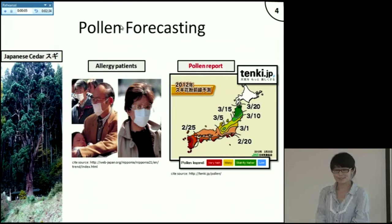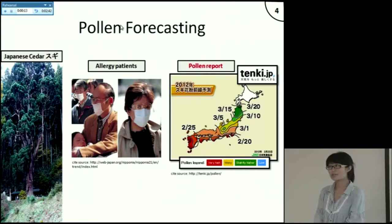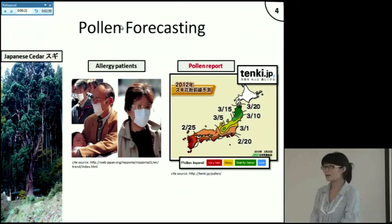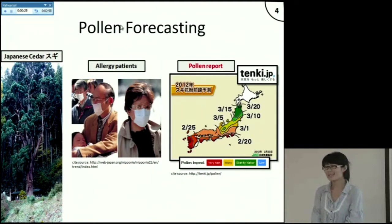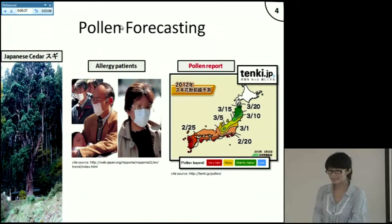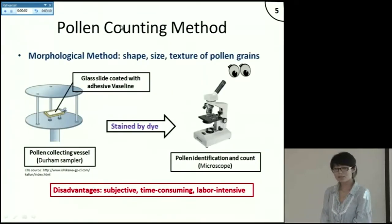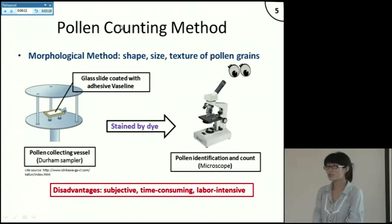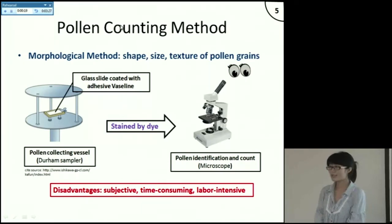Because pollinosis is difficult to completely cure, pollen forecasting is very important for allergy patients. In Japan, more than one quarter of the population is allergic to Japanese cedar pollen. In order to help allergy patients develop more effective avoidance measures and better management of pollinosis symptoms, pollen reports are given on weather forecasting websites based on daily pollen counts. Until now, the most widely used pollen counting method is based on morphological characteristics of pollen grains, where researchers distinguish target pollen species under a microscope.